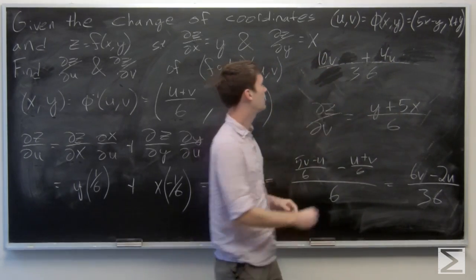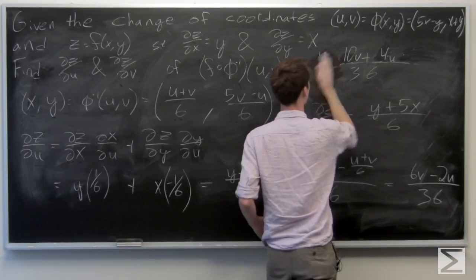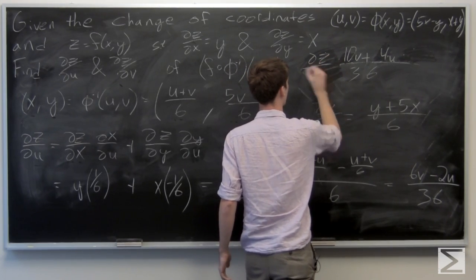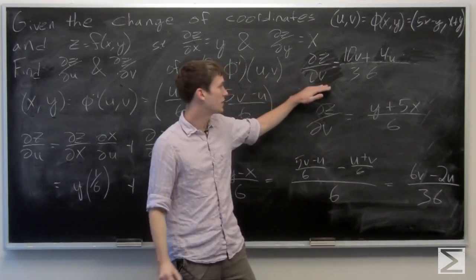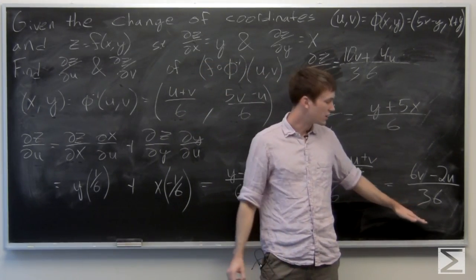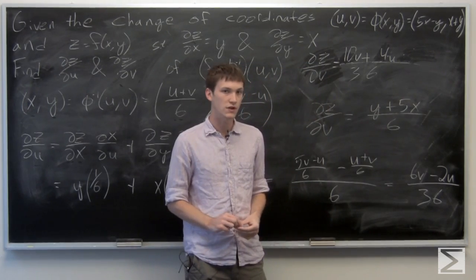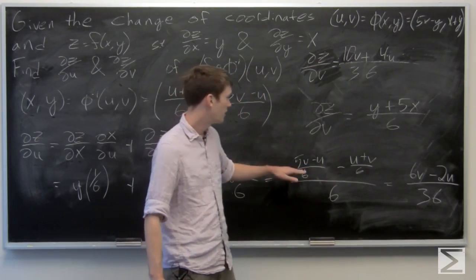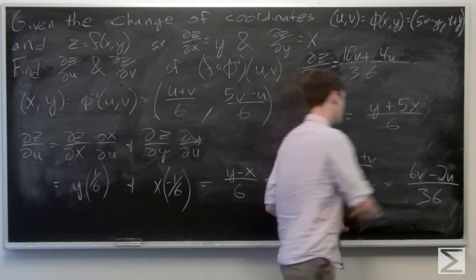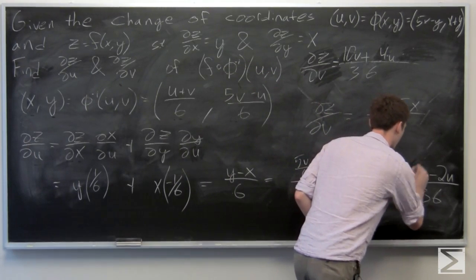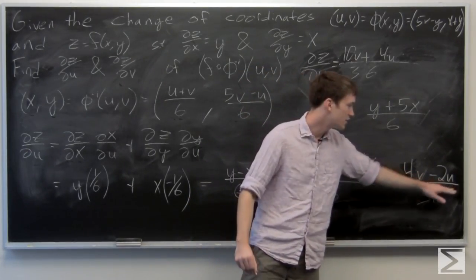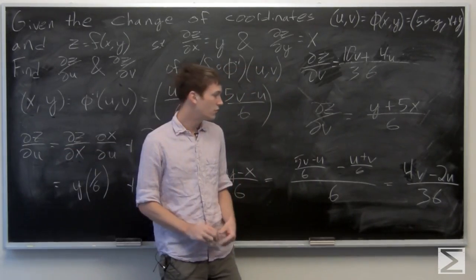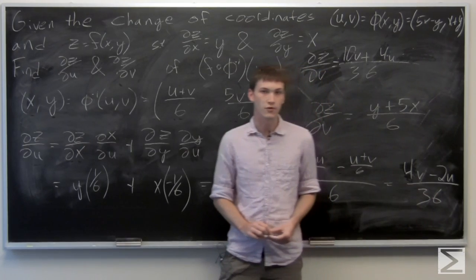So the partial derivative of z with respect to v is (10v plus 4u) over 36. However, I just realized the importance of distributing the minus sign correctly. So for the partial derivative of z with respect to u, it should actually be (4v minus 2u) over 36, giving a corrected final answer.